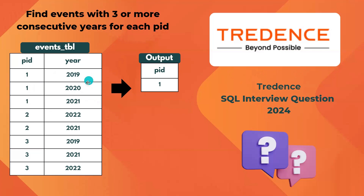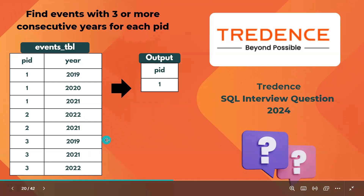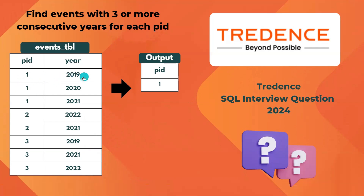For product ID1 we have 2019, 2020, 2021 — those are consecutive, so it passes the condition of at least three consecutive years. For ID2, we only have two years, so the condition fails. For ID3, we have three years but they are not consecutive: 2019, 2020, then 2022 — so that should not appear in the output. Only ID1 with three consecutive years should be in the output.